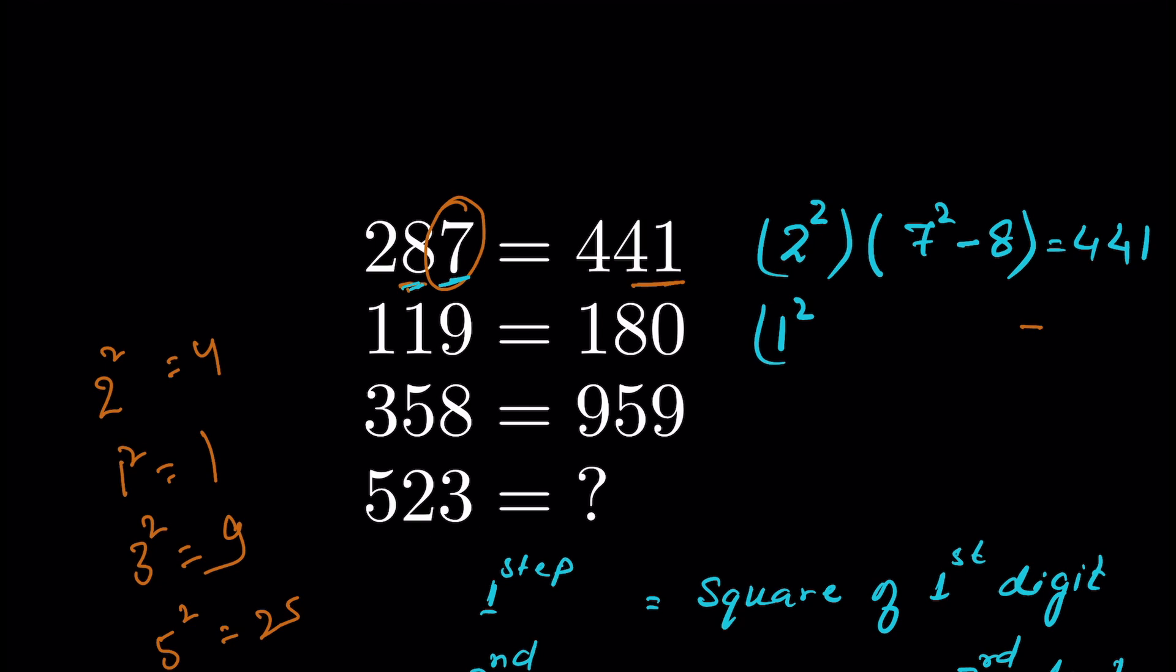If the same logic applies, then square of first digit, that is 1 squared, then square of third digit, that is 9 squared minus the second digit 1. So 1 squared is 1, 9 squared is 81, 81 minus 1 is 80. So this is kind of working.